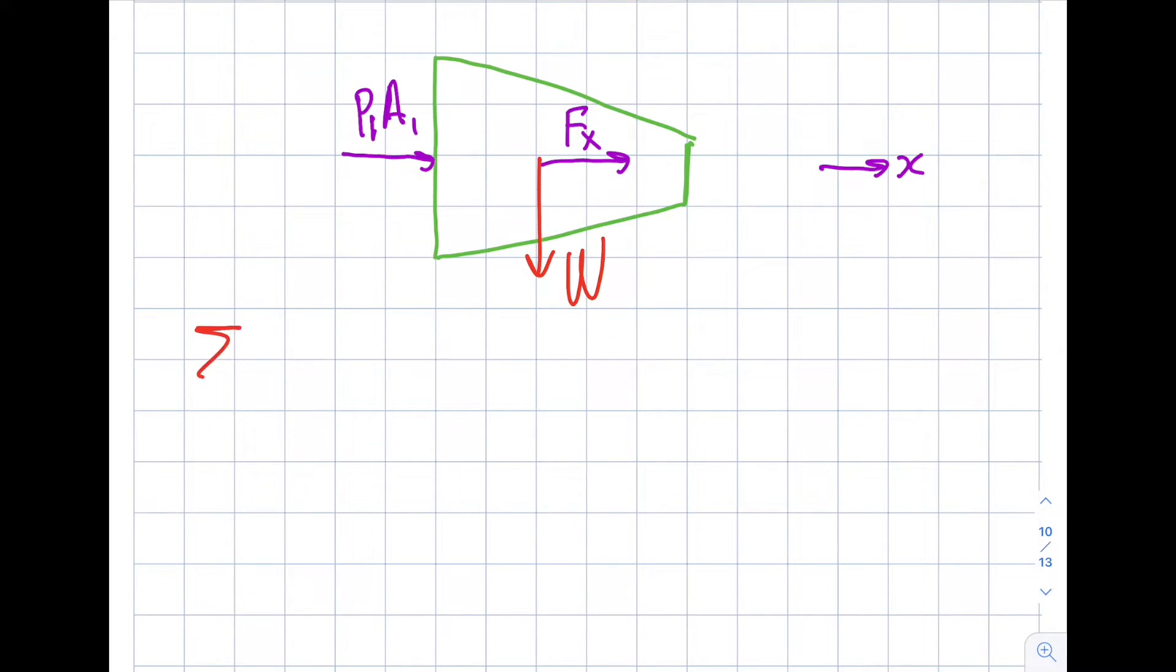So summation of the forces in the X will be equal to, the exit is row, row is constant, so I'm not going to differentiate. Vx2 Vn2 A2 minus row Vx1 Vn1 A1. Exit minus inlet.